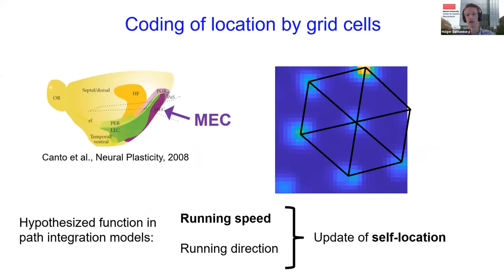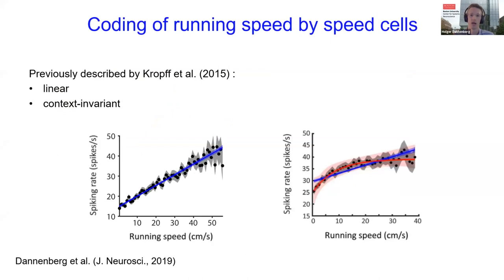In most computational models of grid cells, grid cell firing is updated by integrating a velocity signal. In this talk I will focus on the nature of the speed signal in the medial entorhinal cortex. Current grid cell models rely on a linear running speed signal, and the existence of linearly tuned speed cells in the entorhinal cortex seems to fill that gap. However, many speed tuning curves are better fit by a saturating exponential function, as opposed to a linear function.